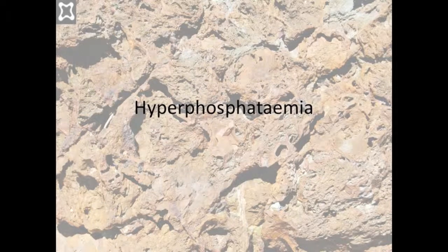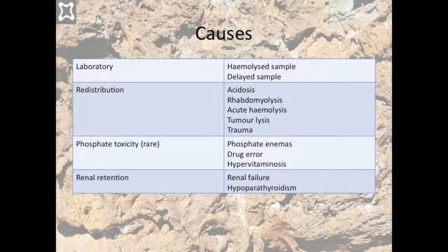A phosphate higher than 1.6 millimoles per litre is considered significant and is a rare event in ICU. The cause is usually either reduced loss due to renal dysfunction or redistribution from intracellular stores. These can include trauma, rhabdomyolysis and tumour lysis. Other less common causes are shown here.